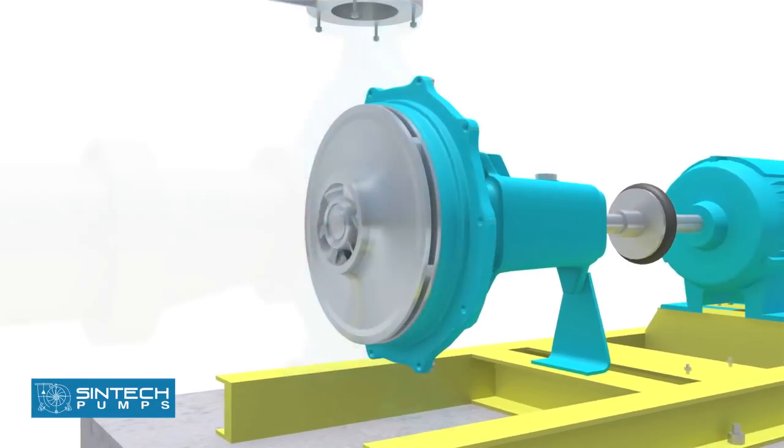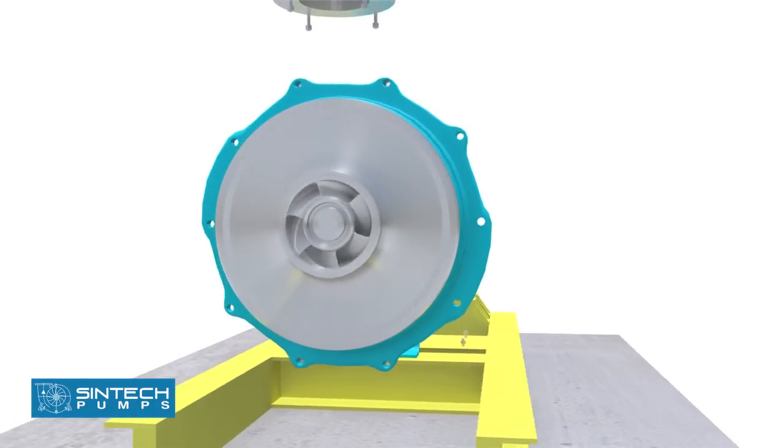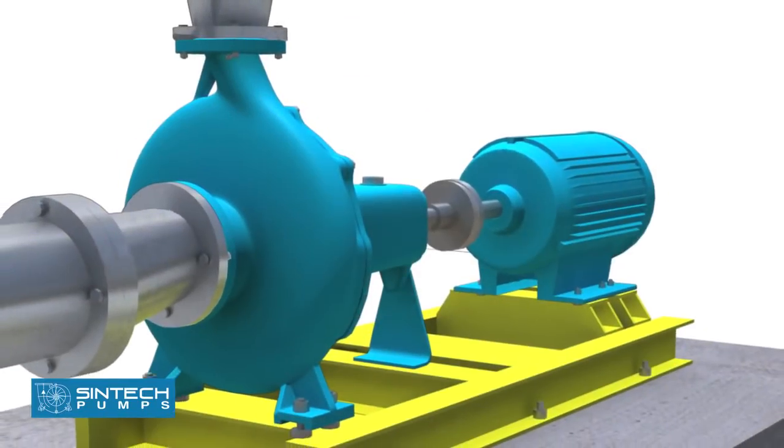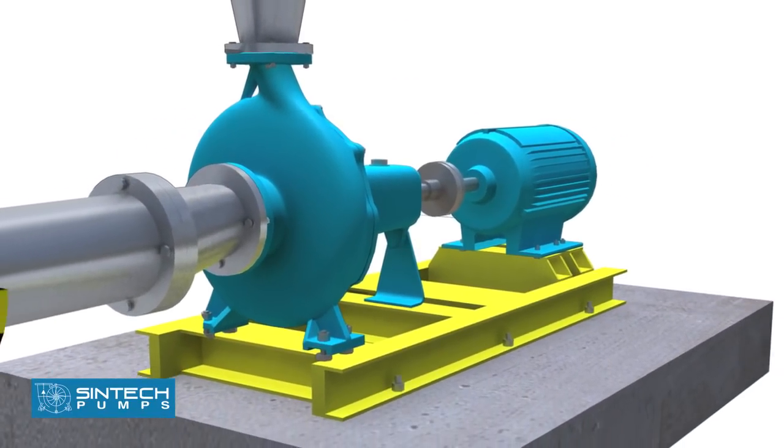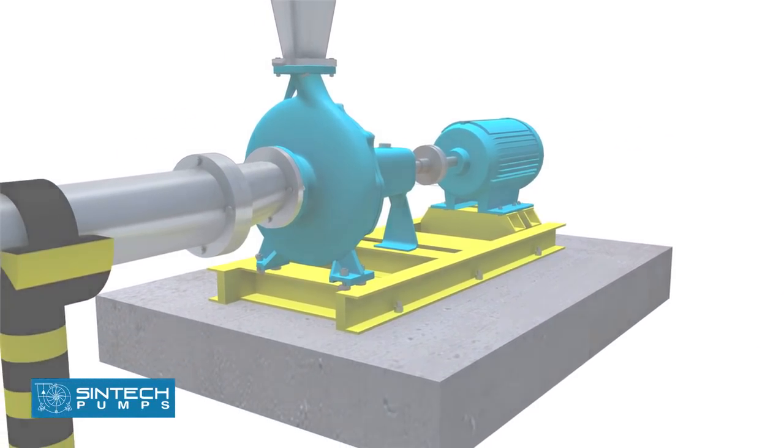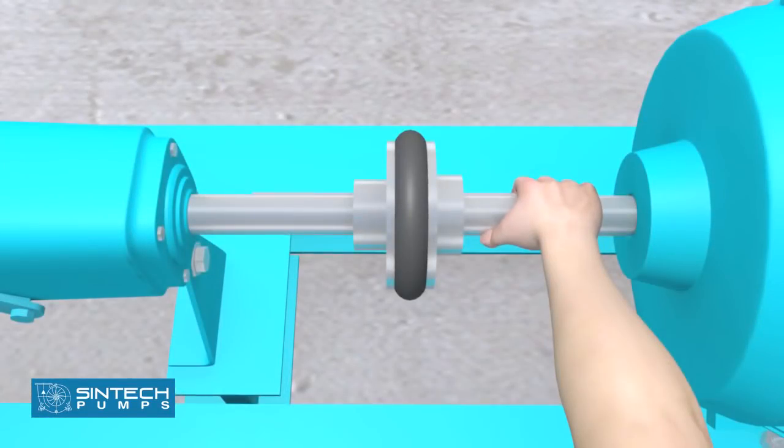The motor should be wired correctly to ensure the correct direction of rotation. This check has to be carried out before the pump is coupled. Once the pump and motor have been coupled, test the movement manually by rotating it by hand to see if it is rotating smoothly.